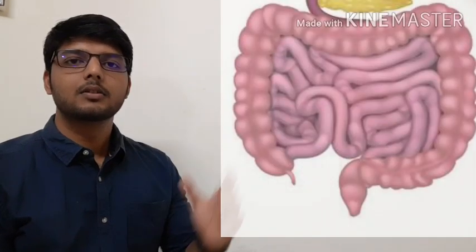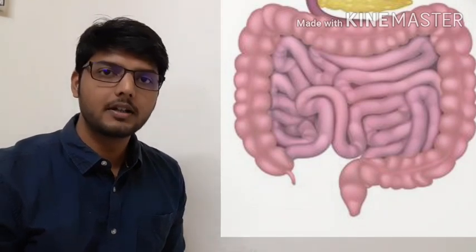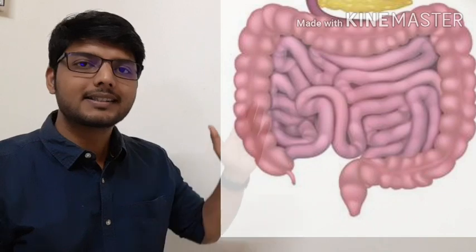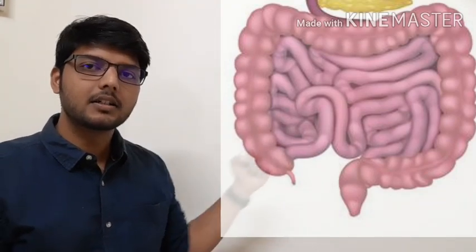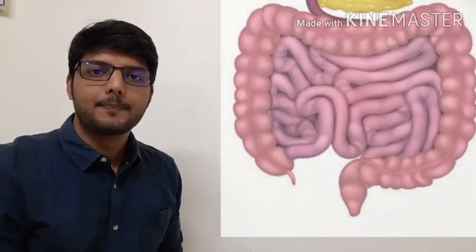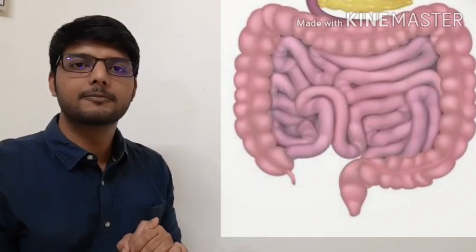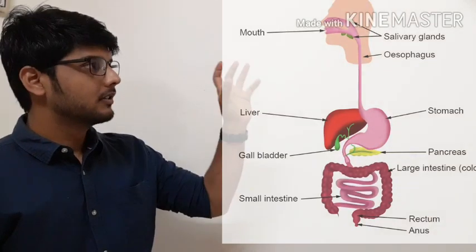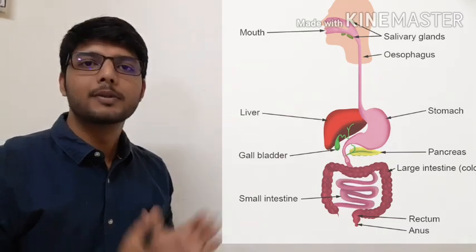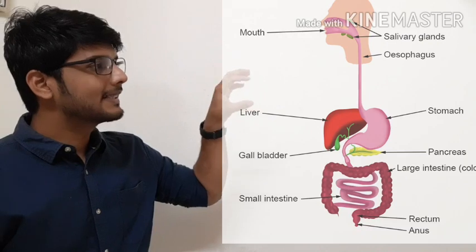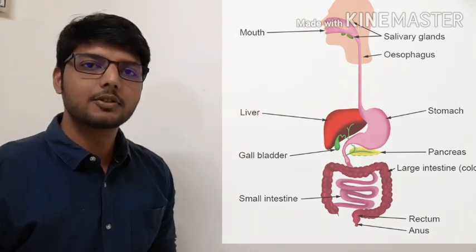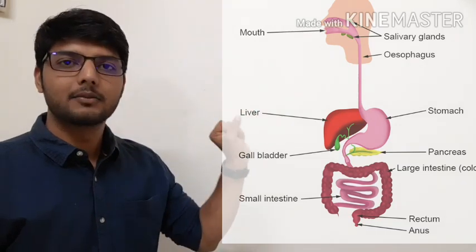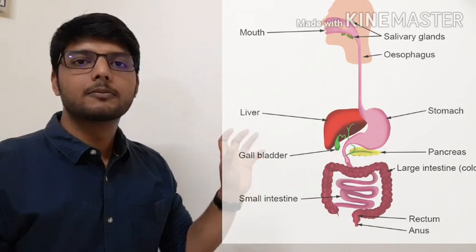Then this food moves to the next part: the small intestine. The small intestine is a very long and narrow tube — about 7.5 meters long — arranged in a coil-type structure in our belly. This is the site where complete digestion of food occurs, and absorption is also done in this area. The food which comes from the stomach to the small intestine is partially digested. The liver secretes bile juice, which is temporarily stored in the gallbladder, and bile is very important for digestion of fats.